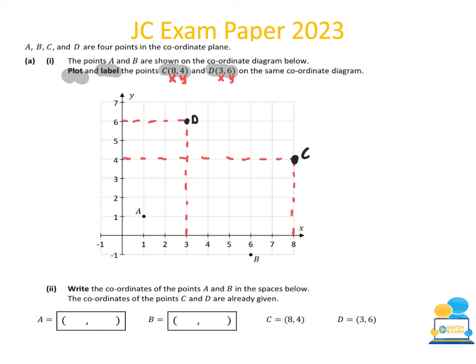The second part of the question asks us to write the coordinates of points A and B. We look at the diagram and identify where each point falls on the x-axis and y-axis. For point A, it lies at 1 on the x-axis and 1 on the y-axis, giving the coordinate (1, 1). For point B, it falls at 6 on the x-axis and at minus 1 on the y-axis, giving us the point B (6, -1).